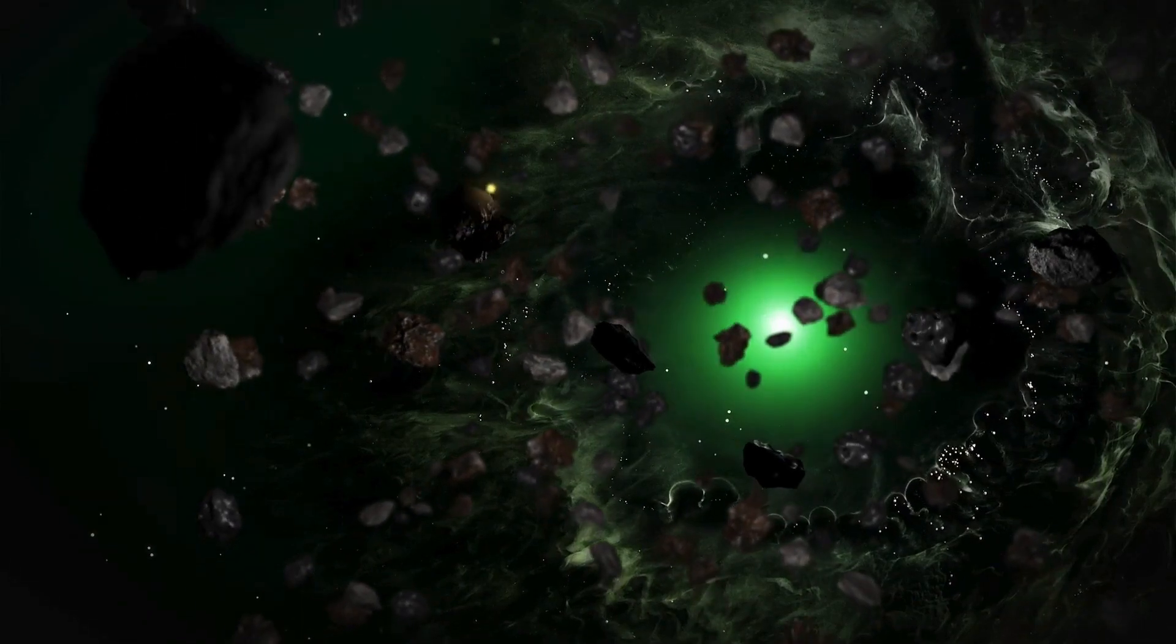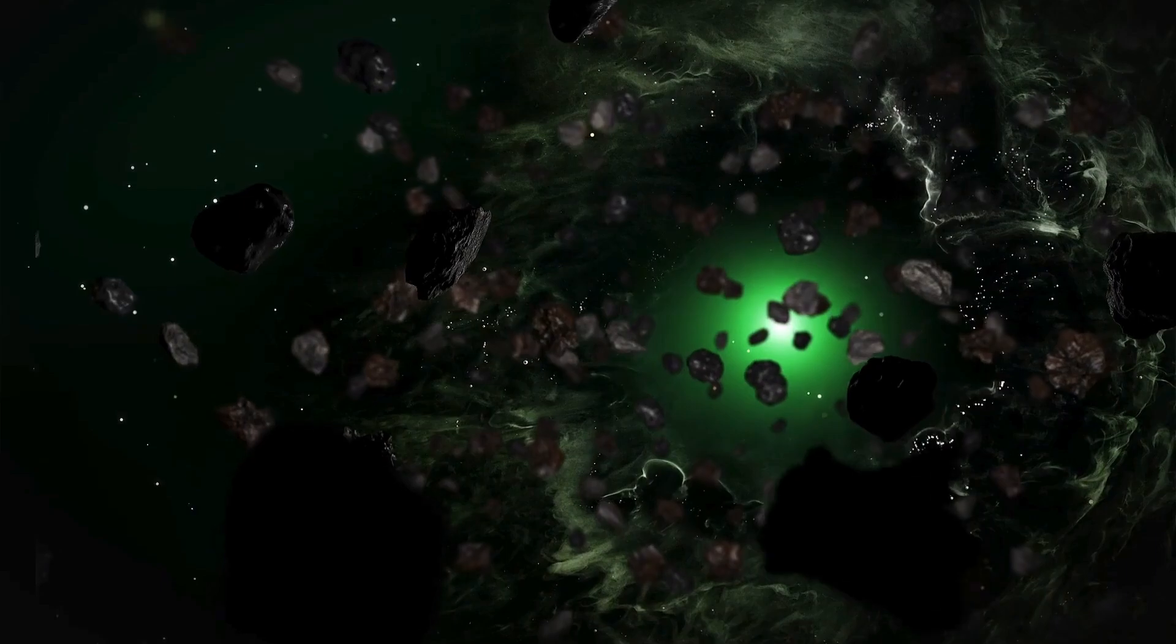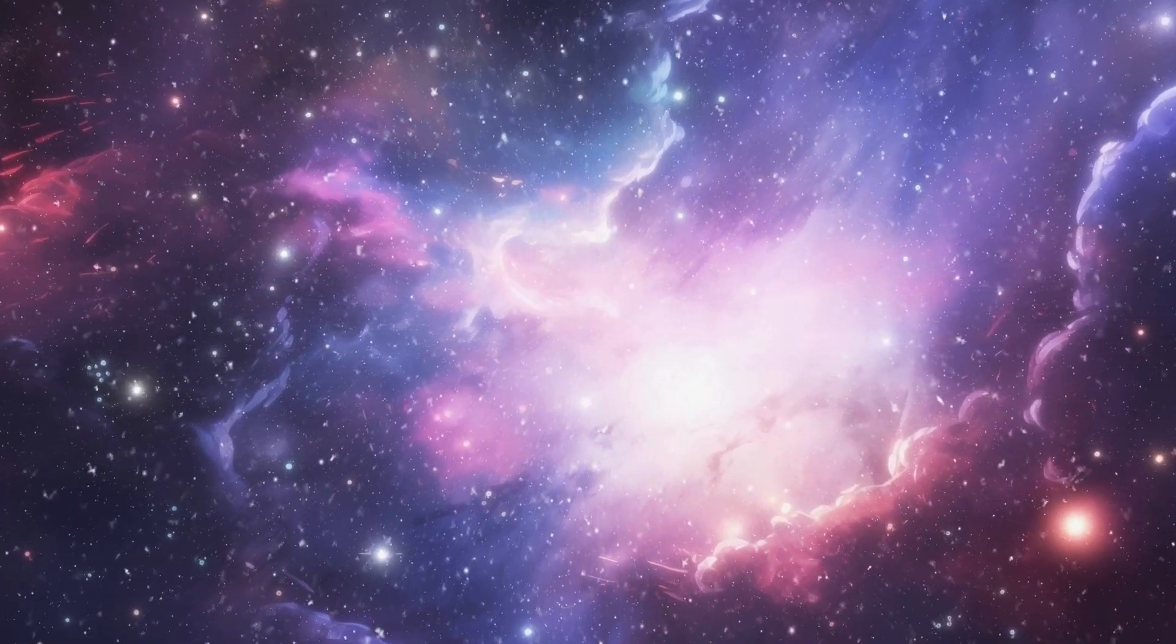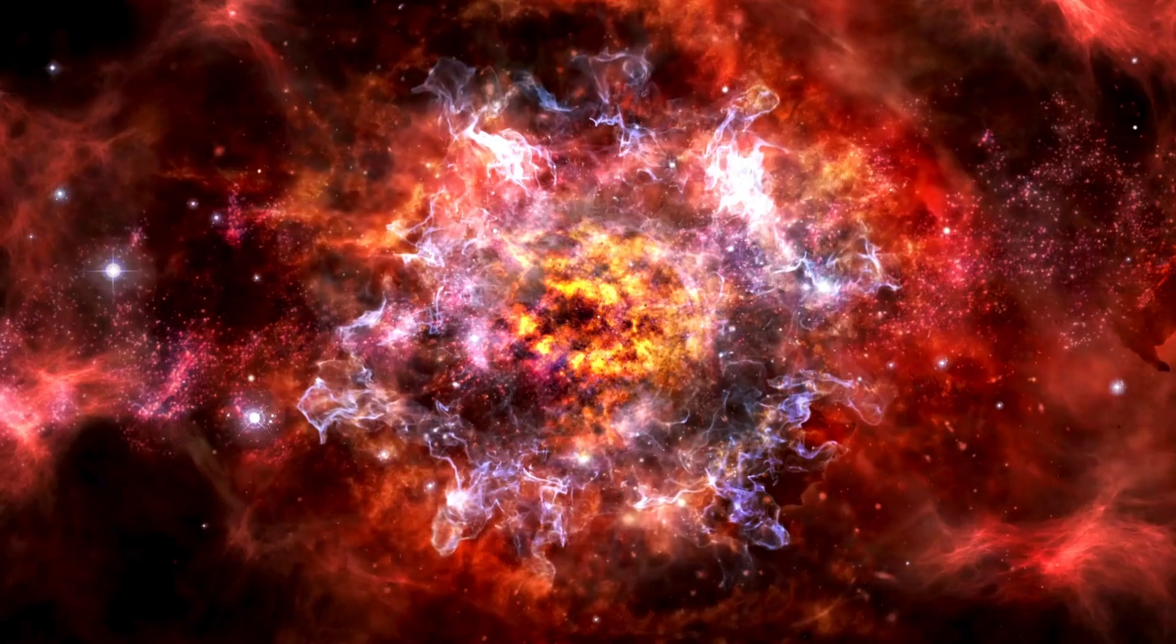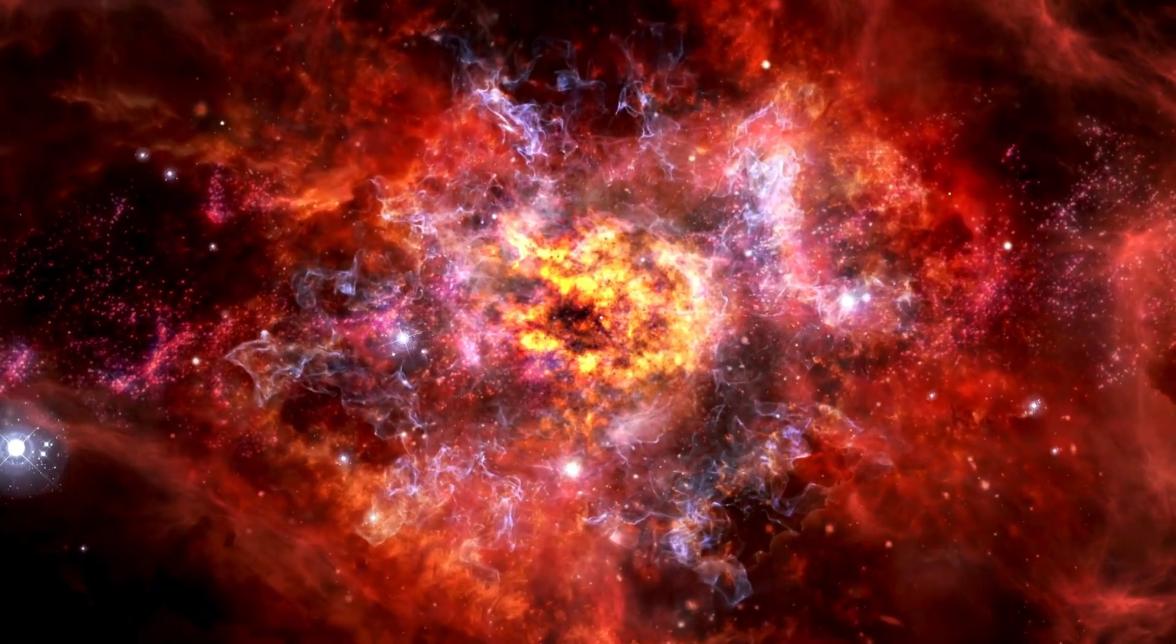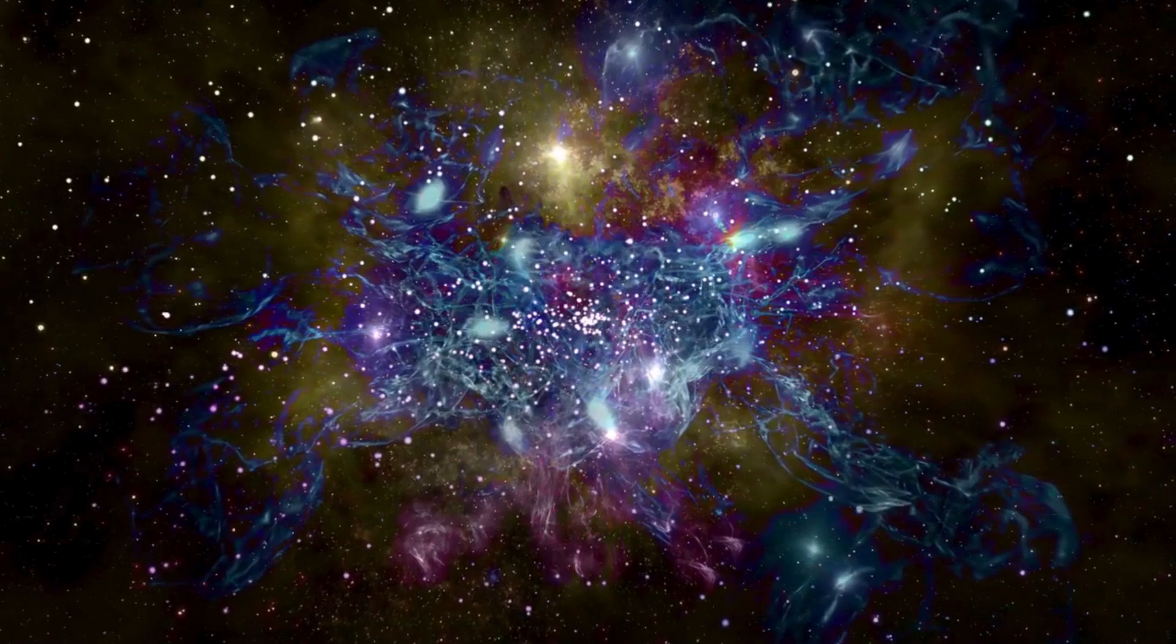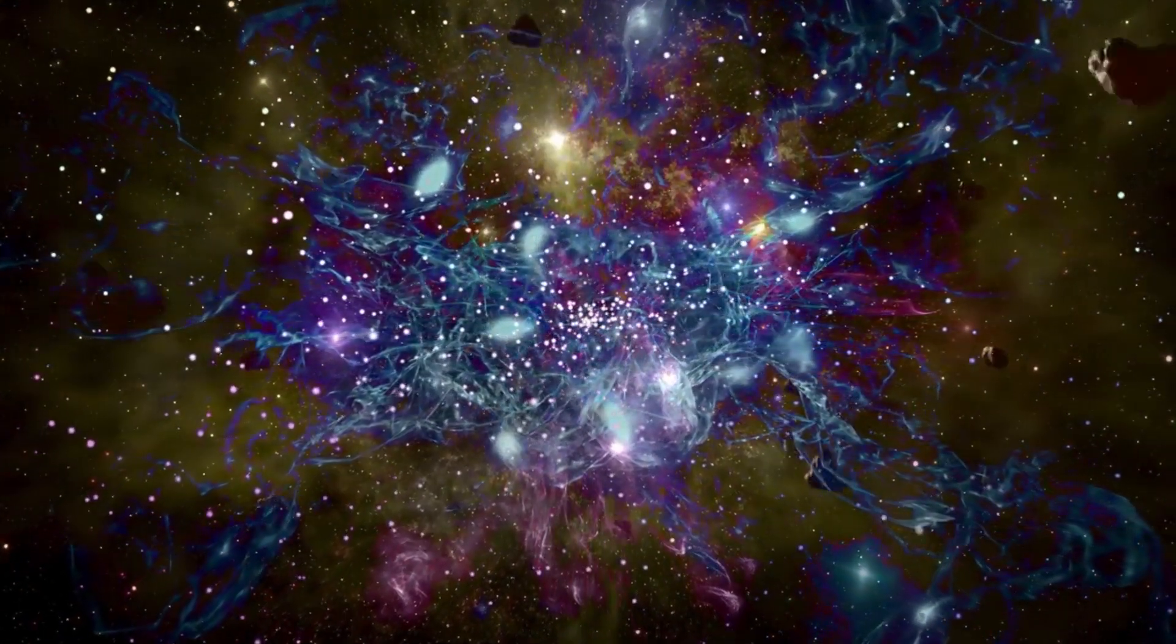There are countless exoplanets waiting to be discovered in our universe. These planets come in all shapes and sizes, with some being massive gas giants while others resemble our own Earth. One type of exoplanet that has caught the attention of space experts is the gas giant. These planets are similar in structure to Jupiter and Saturn but are much larger. Some of these behemoths have been dubbed super-Jupiters, surpassing even the largest planet in our solar system. But that's not all.